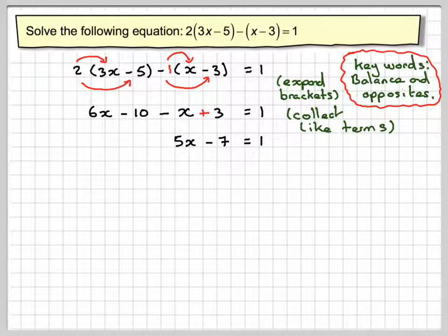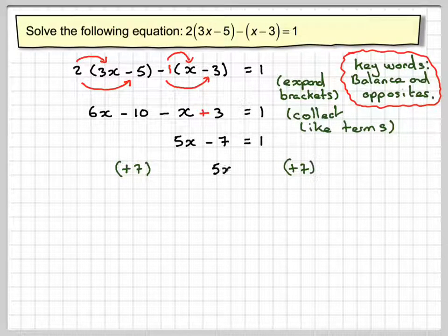So we're now down to that two-step problem. Adding 7 to both sides, this will just give me 5x on this side, and 1 plus 7 gives me 8.